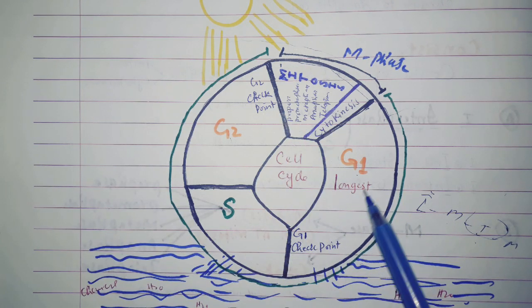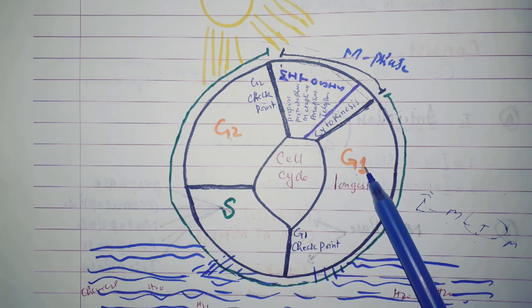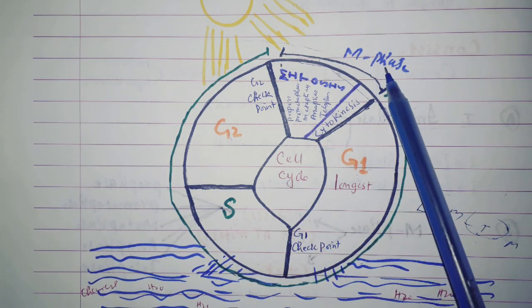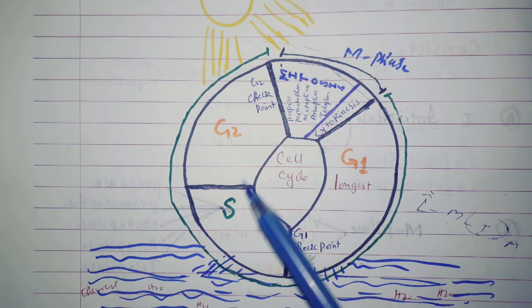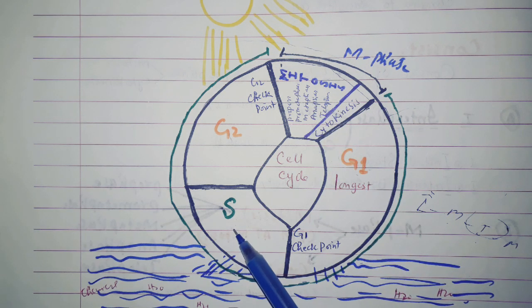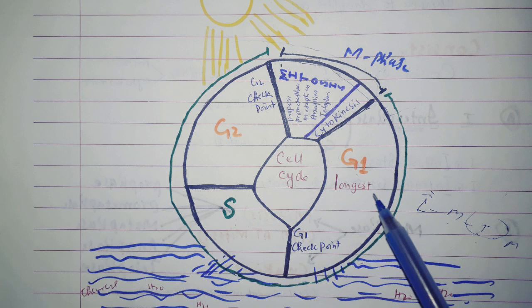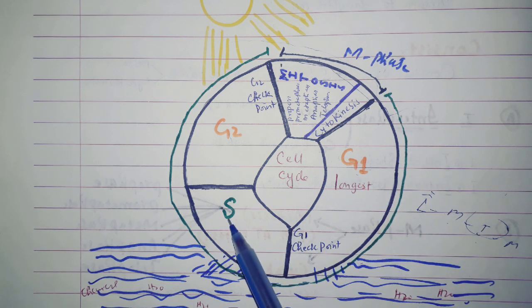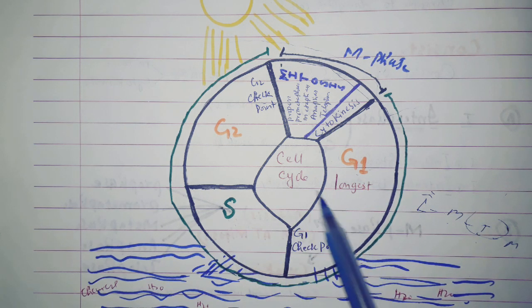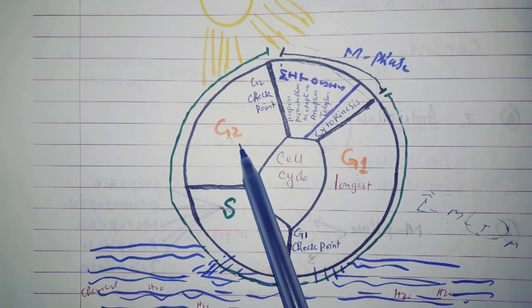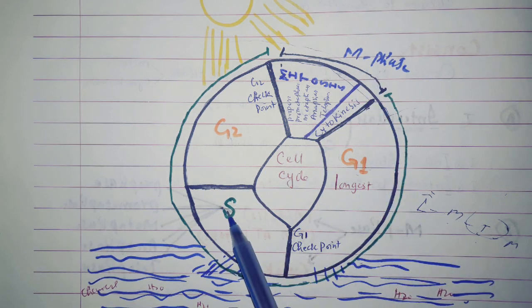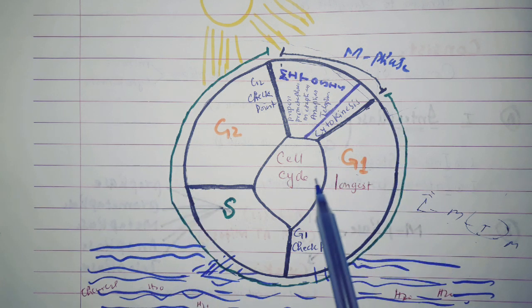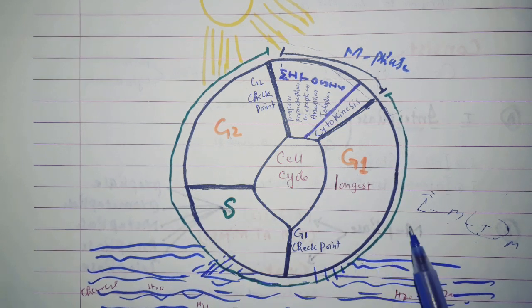For MCQs on phase locations: G1 is present between M phase and S phase (mitosis and DNA synthesis/replication). S phase is present between G1 and G2. G2 is present between S phase and M phase. Together, G1, S, and G2 make up the whole interphase.